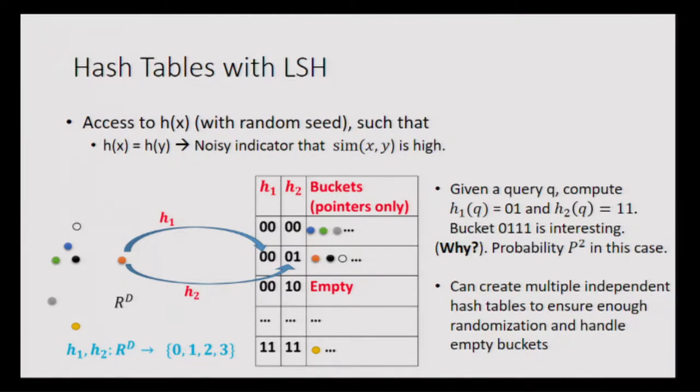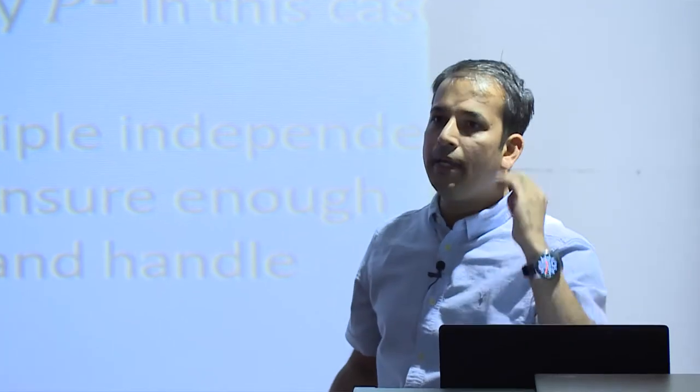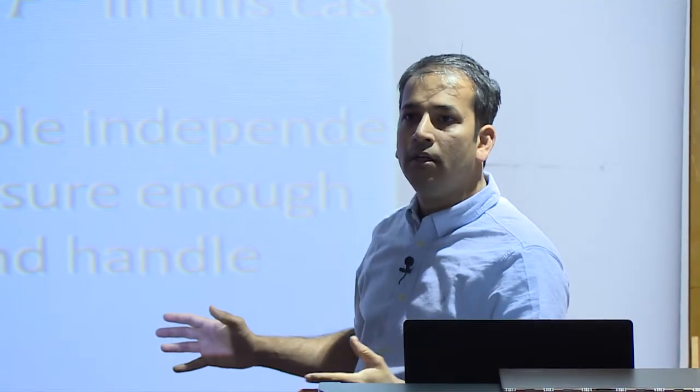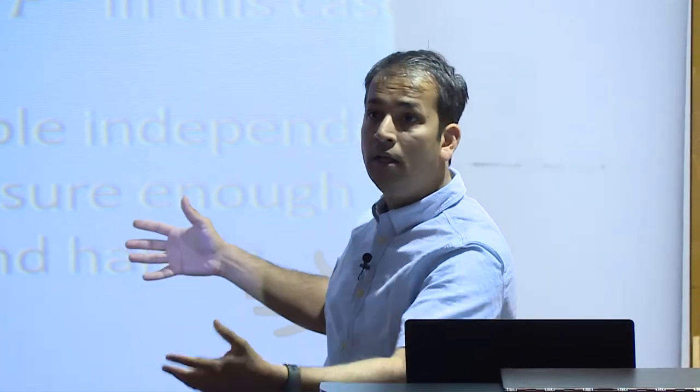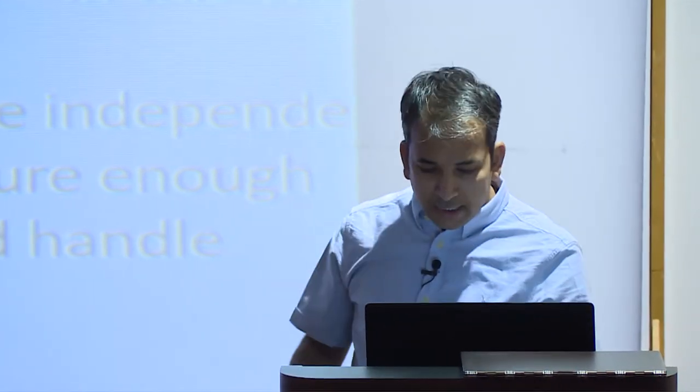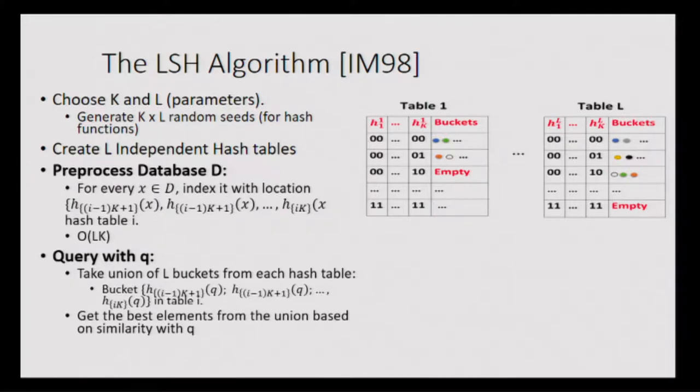In computer science a memory access is a fast operation, so in one memory access you can beat randomization — you get a random sample with a very high chance of being similar to the query. This idea can be boosted: the famous 1998 algorithm generates several hash tables, each indexed using k independent hash functions. When you get a query, you probe one bucket in each of the L hash tables, take the union of those candidates, and look for the near neighbor among those candidates.